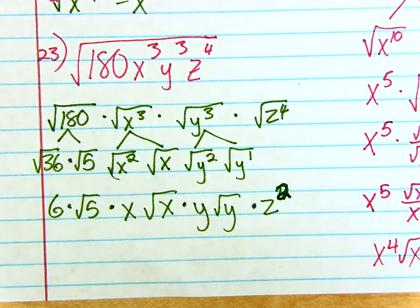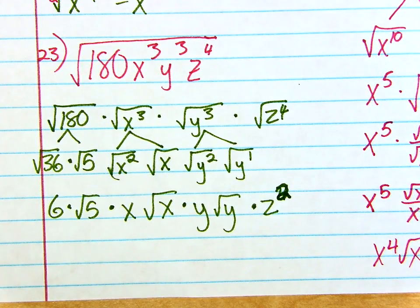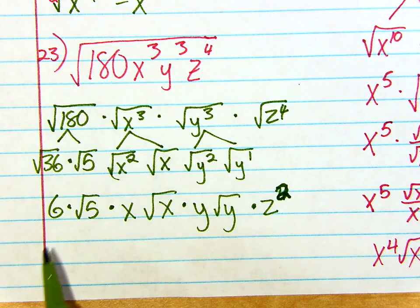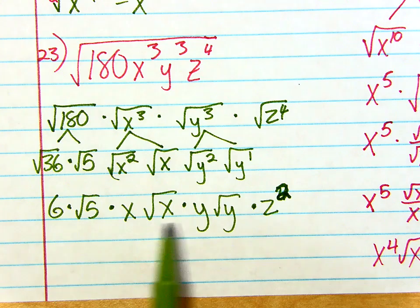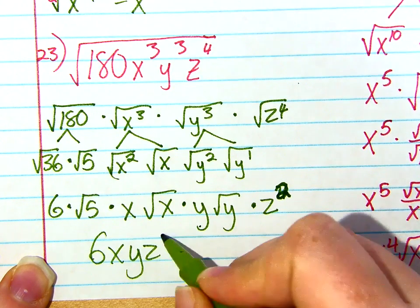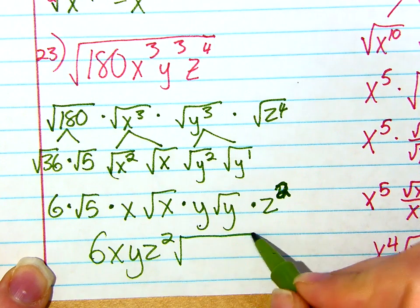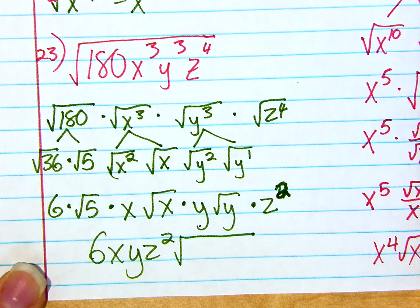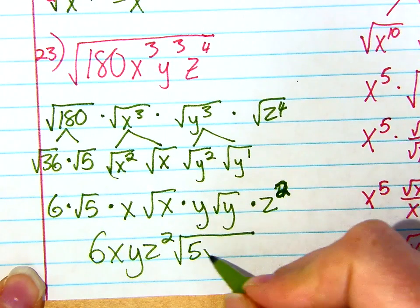Now I'm almost done. All I have to do is multiply everybody that's not in a radical and they go in front. Everybody that is in a radical, they go at the end under a radical still. Okay? So not in a radical, I have 6xyz squared. And then in the radical, just put them all together. 5xy.